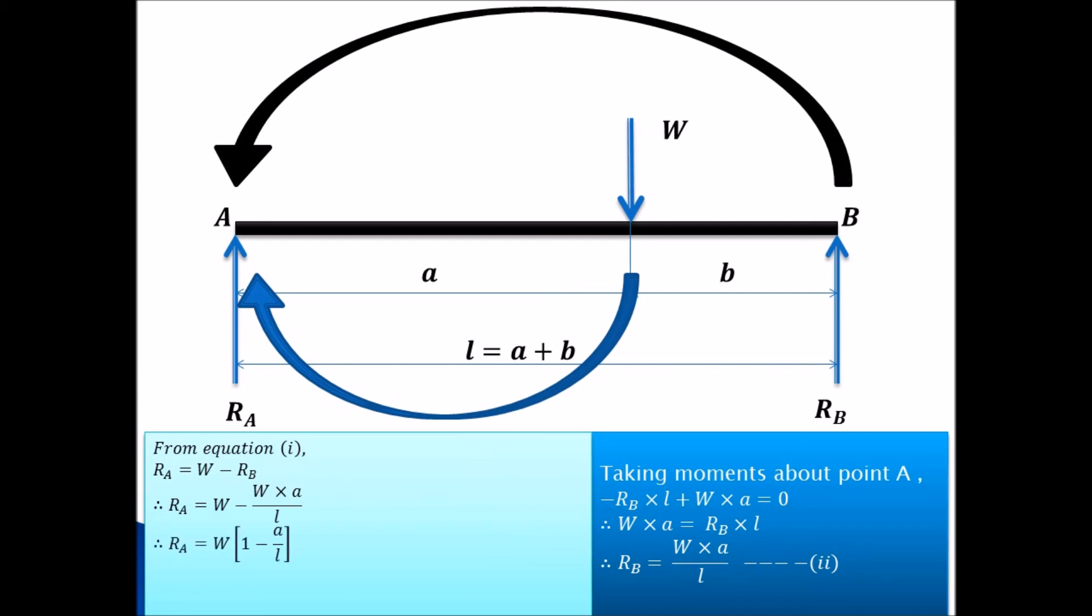Now we can take W common from this. So it is W into bracket 1 minus a upon L. Or you can say that it is nothing but W into bracket L minus a upon L. And L minus a is the value of b. Now as you can see L is equal to a plus b. So L minus a will be equal to b. So in place of L minus a, we have substituted the value of b. So it is W into b divided by L. So in this way, we have calculated the values of RA and RB. That is the reactions at support RA and RB.